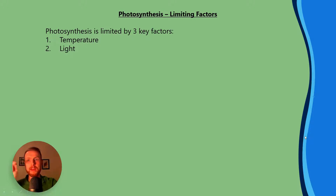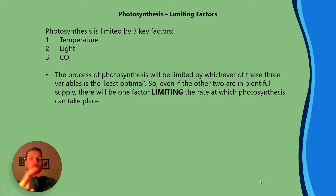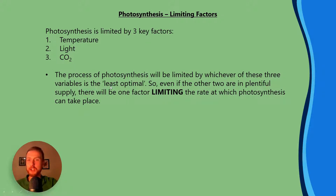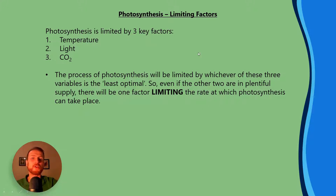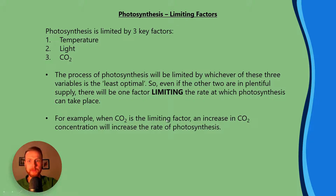Photosynthesis is limited by three key factors: temperature, light, and CO2. That is not in a priority order, because CO2 has the biggest impact and is often the limiting factor in most setups. The process of photosynthesis is going to be limited by whichever of these variables is the least optimal. So if we have plenty of temperature and light but not enough CO2, CO2 will limit. If we have plenty of light and CO2 but very cold temperatures, temperature is going to be the limiting factor.